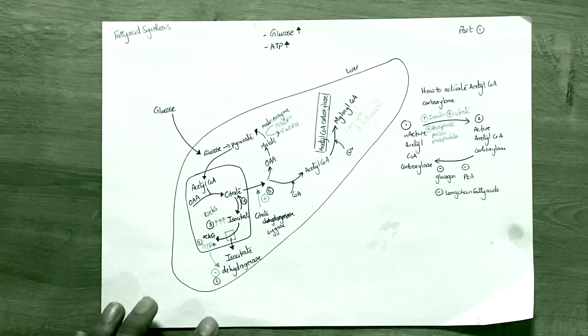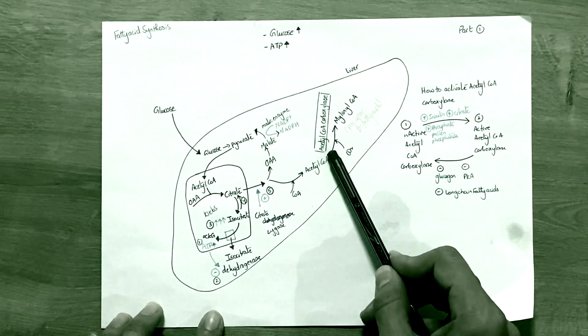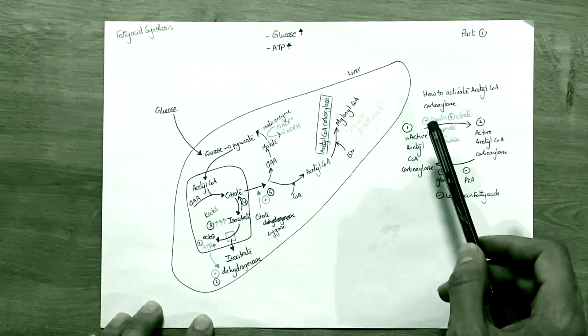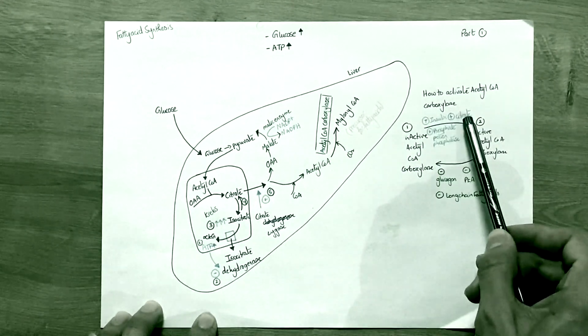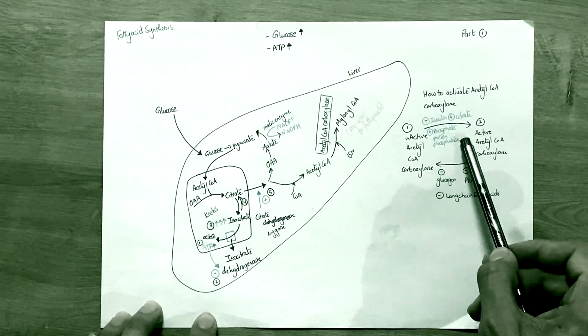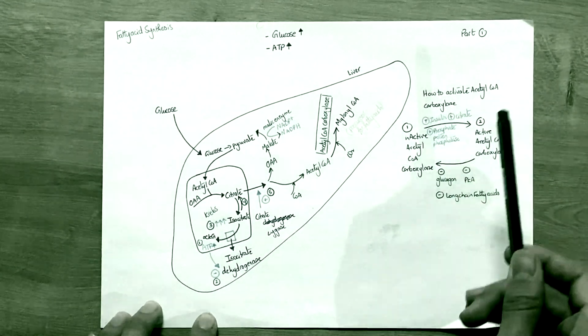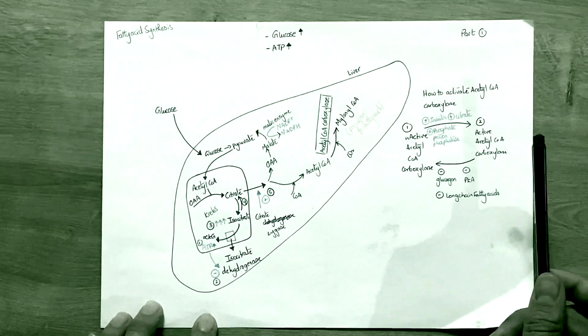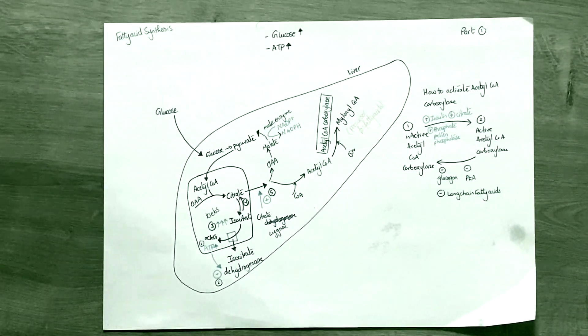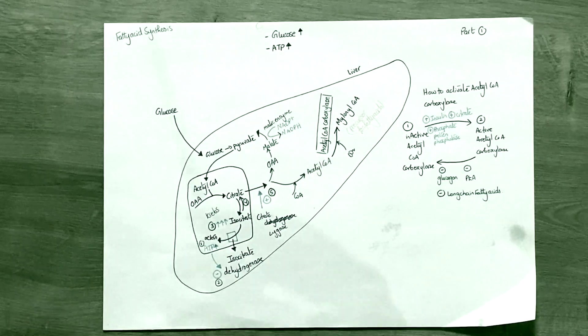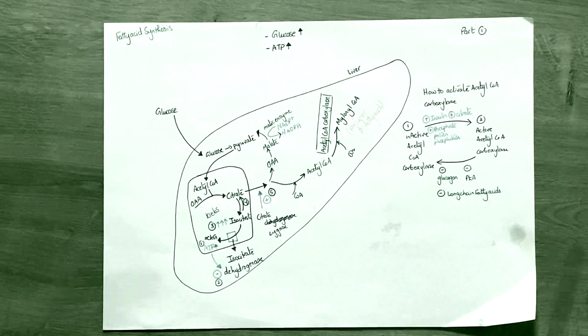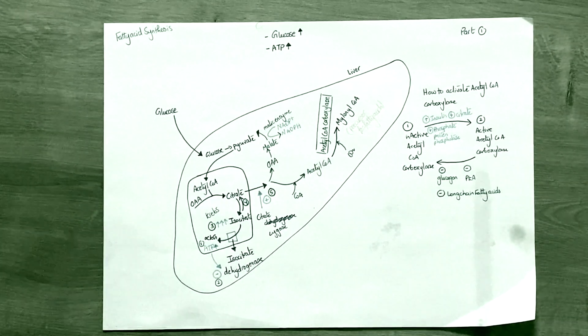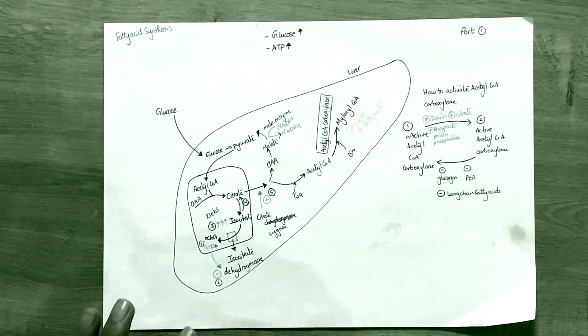How we are able to activate the acetyl-CoA carboxylase is by the positive effect of insulin, citrate, phosphate protein phosphatases. These are the three ones that are able to activate the acetyl-CoA carboxylase, and when it's active, it's able to convert glucose into fatty acids for storage.